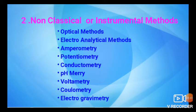Now coming toward the non-classical or instrumental methods of analysis. In instrumental methods, certain physical or chemical properties are measured along with certain criteria. These methods are a little expensive but consume very little time and the speed of analysis is quite high, so nowadays instrumental methods are preferred. Physical properties such as conductivity, electro-potential, light absorption or emission, mass-to-charge ratio, or radioactivity are qualitatively and quantitatively measured. These methods are used in inorganic, organic, biochemistry, and various other fields of science.